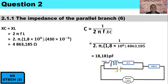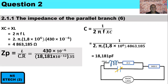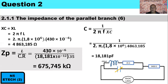Now we can determine the impedance across the parallel branch using L over CR. The inductor value is 430 micro-Henry, the capacitor is 18,181 picofarads (times 10⁻¹²), and the resistance is 35 ohms. Therefore the impedance across the parallel branch is 675,745 kilohms.